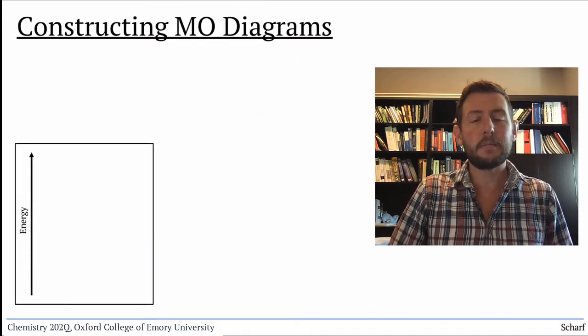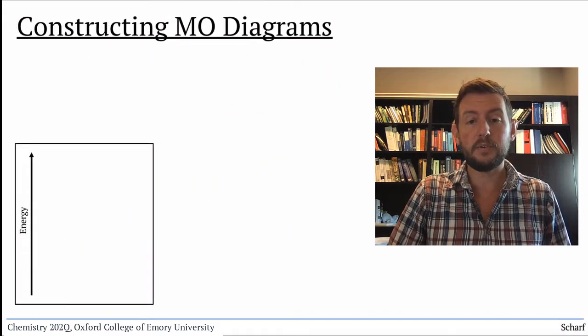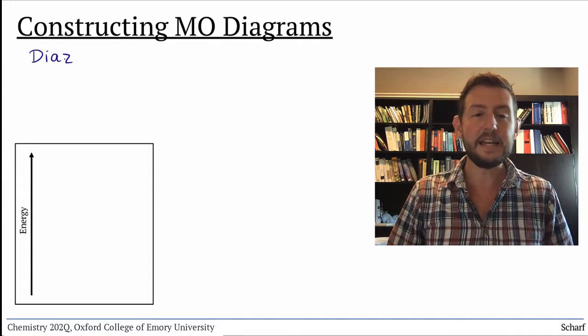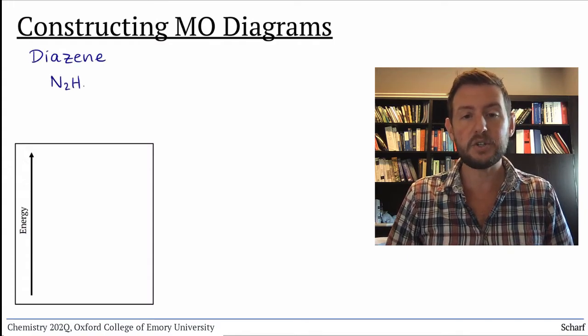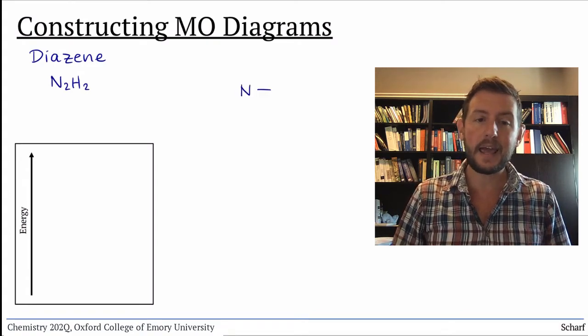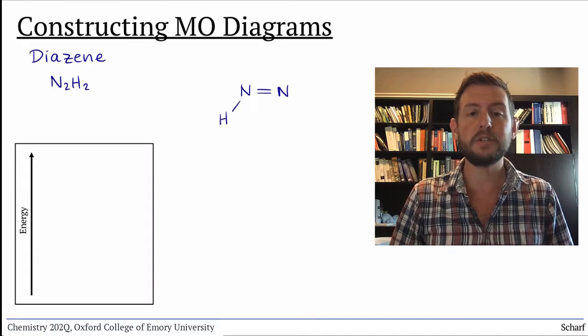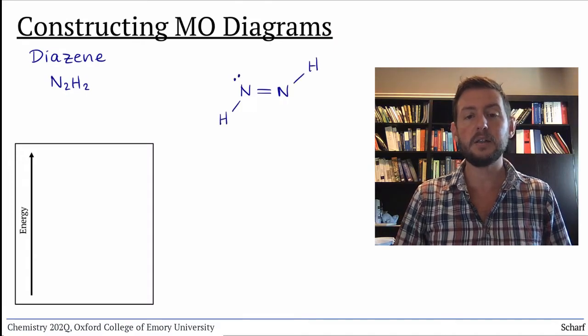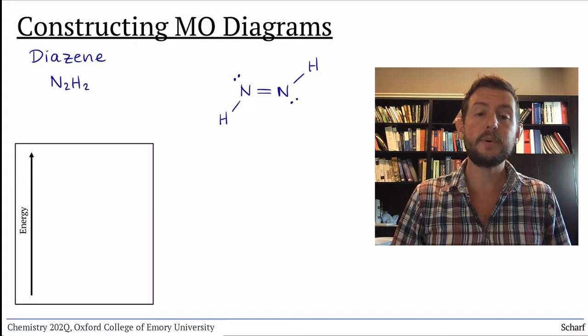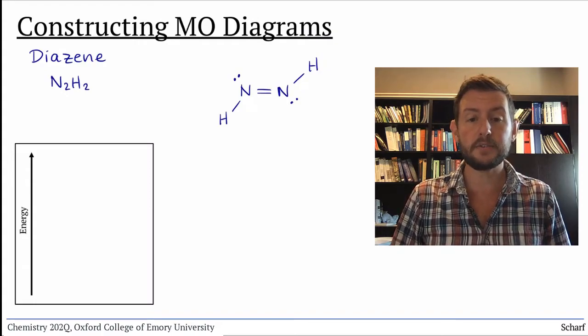Let's look at the MO diagram of a slightly more complicated molecule, which will let us see some additional stuff. Diazene is N2H2, and its Lewis structure looks like this. It has an NN double bond, one hydrogen on each nitrogen, and a lone pair on each nitrogen. First, we need to identify the hybridization of the nitrogen atoms.